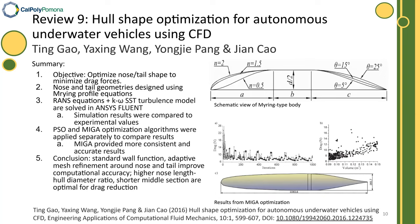In the ninth study, a combination of ANSYS Fluent and two different optimization algorithms were used to determine the optimal hull profile. One algorithm produced better results than the other, and it was concluded that a longer nose and shorter body produced the highest drag reduction.